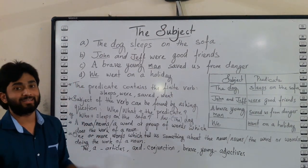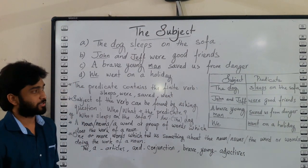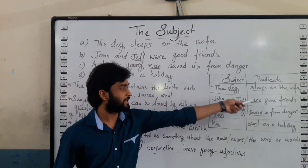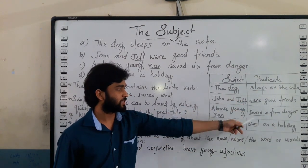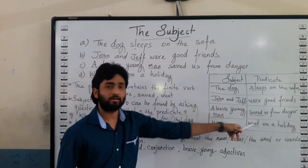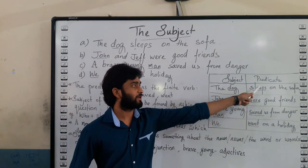And we know that the predicate contains a finite verb. So we can find that sleeps, were, saved, and went all belong to the predicate part of each sentence.